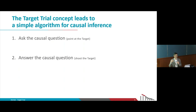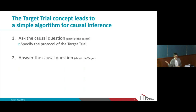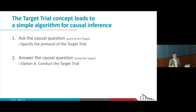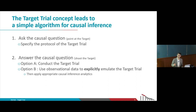How do we ask a causal question? We design a randomized trial — the target trial. The first step in causal inference from observational data is to design a randomized trial that we may never do, writing the protocol. If we can conduct that target trial, we do. If we can't, we use observational data to explicitly emulate each component of that protocol — and explicitly is the keyword here.